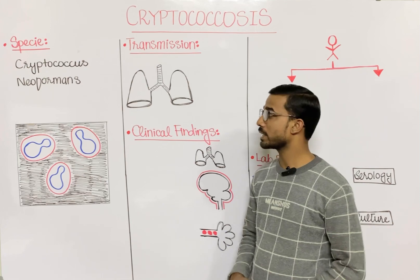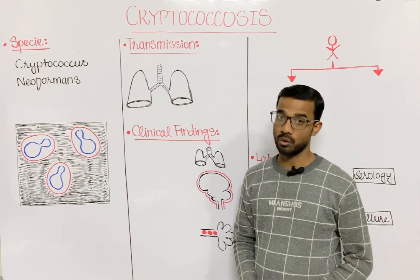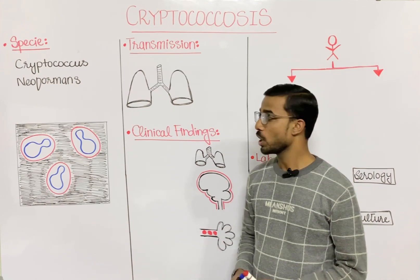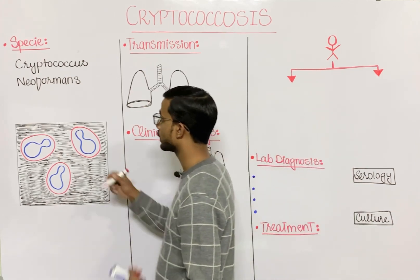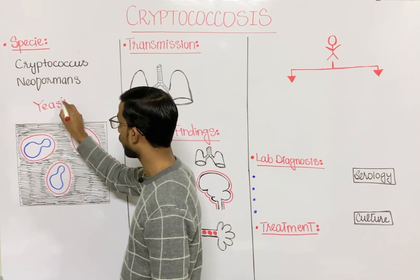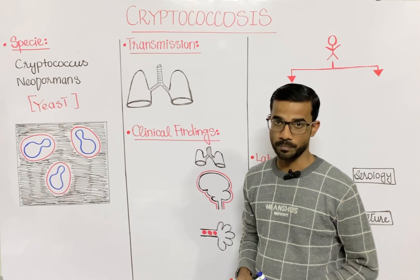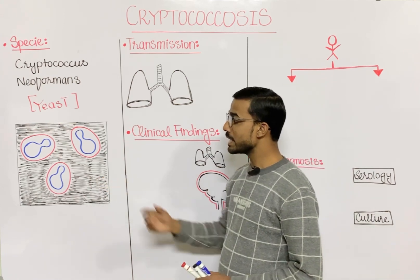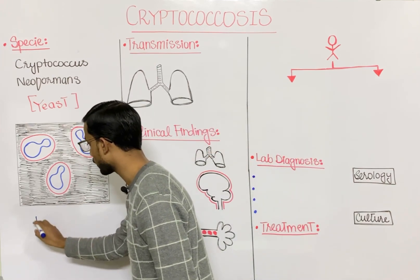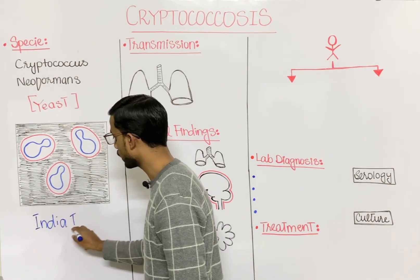The fungus Cryptococcus neoformans causes cryptococcosis. It actually exists in the yeast form — specifically an oval budding yeast form. Here is the preparation of the fungus, which is the India ink preparation, used to visualize Cryptococcus neoformans under the microscope.